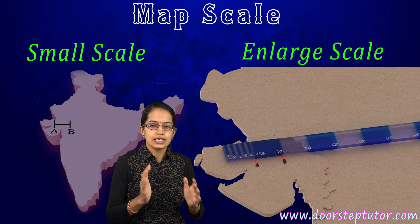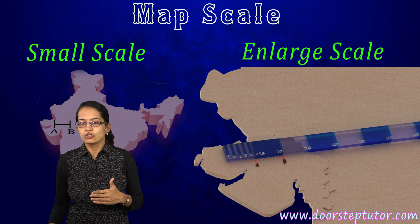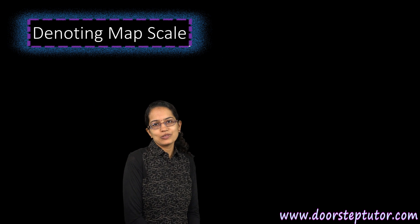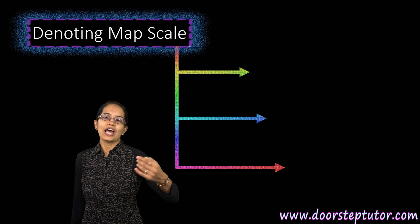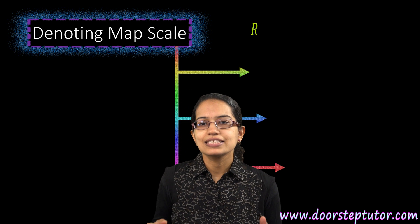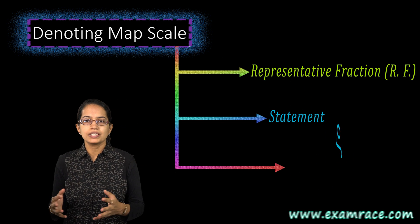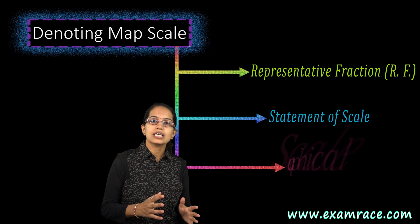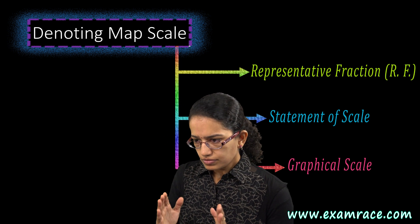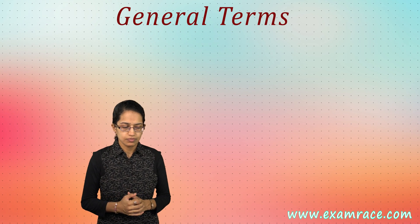This map provides a relationship with the real ground. Map scale can be denoted in three ways. One we already talked about — and will discuss further — is representative fraction. The next is statement of a scale, and the last is a graphical scale. Before discussing these three, let's talk about general terms: there are two systems of measurement.